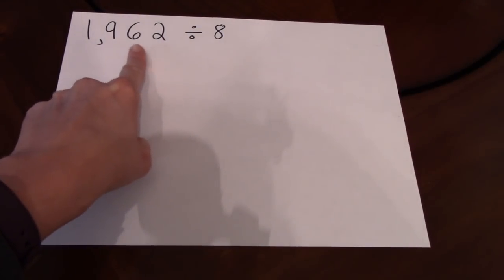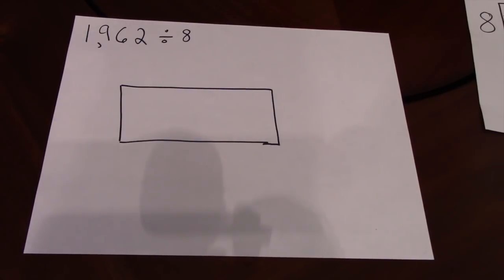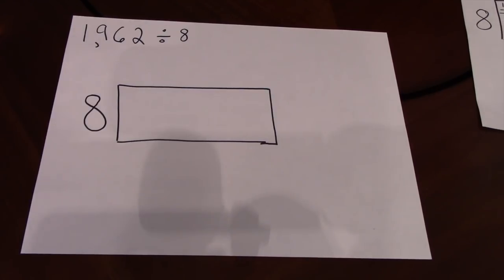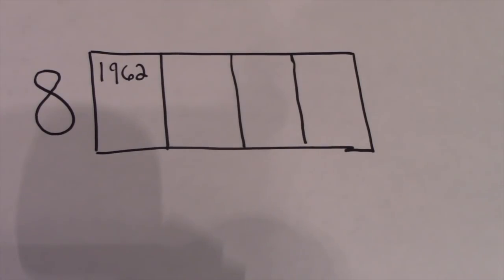Ones, tens, hundreds, thousands. We are going to create a rectangle, hence the title of this video, Area Model Division. We are going to place our divisor on the left side of our rectangle. Chunk that rectangle into four pieces because we are in the thousands place. Since division is the opposite of multiplication, our final area of this rectangle is 1,962.